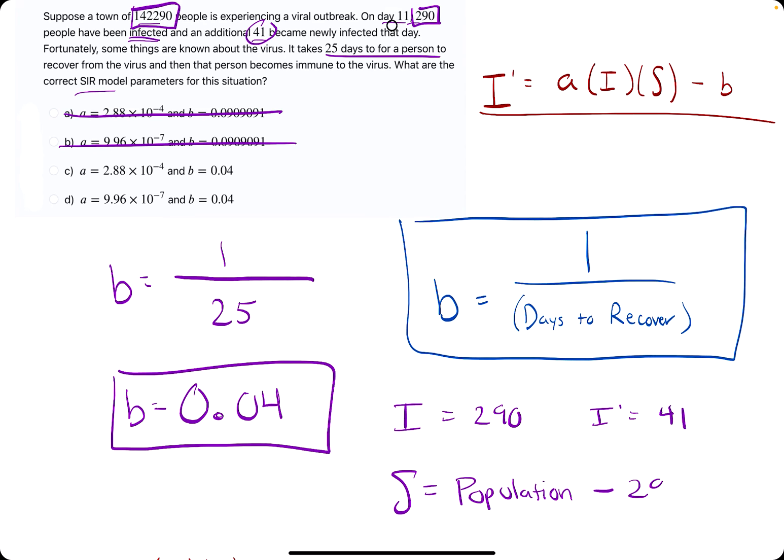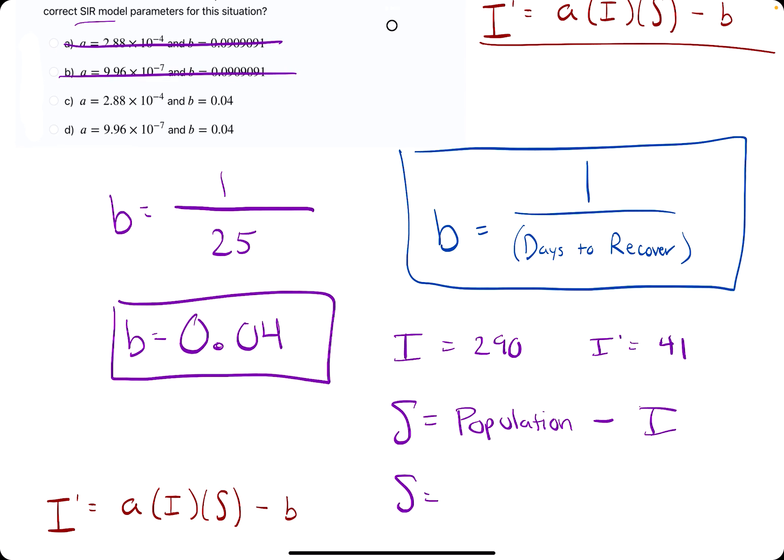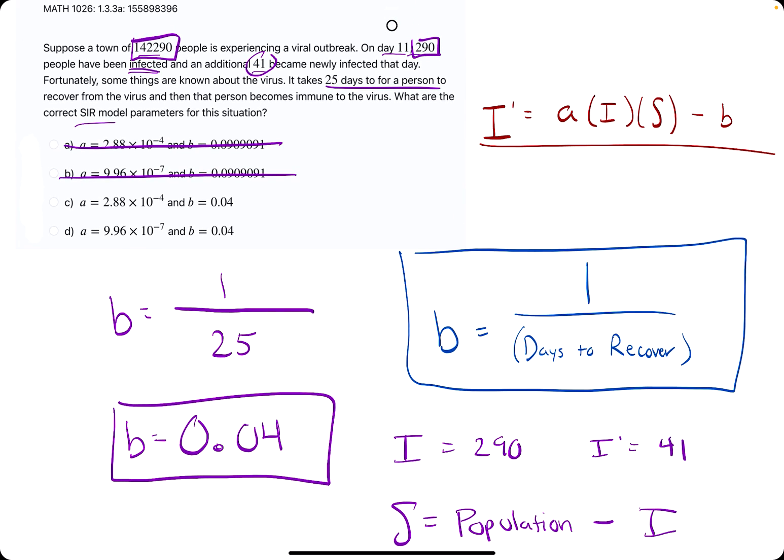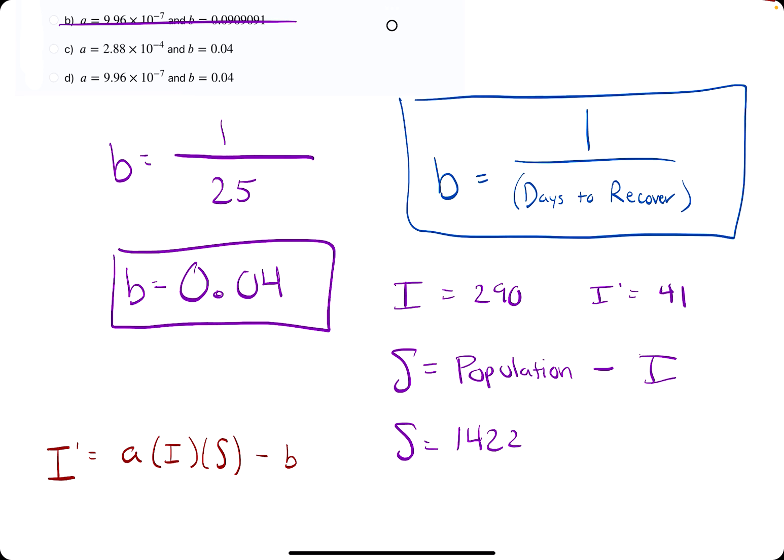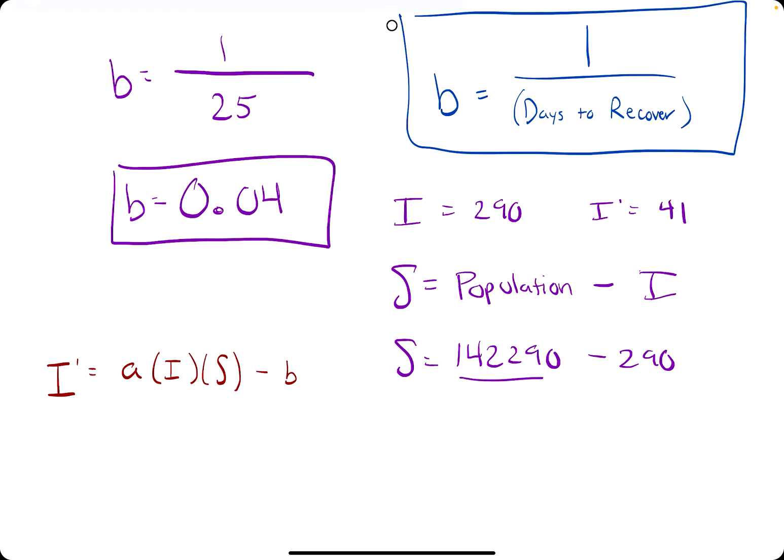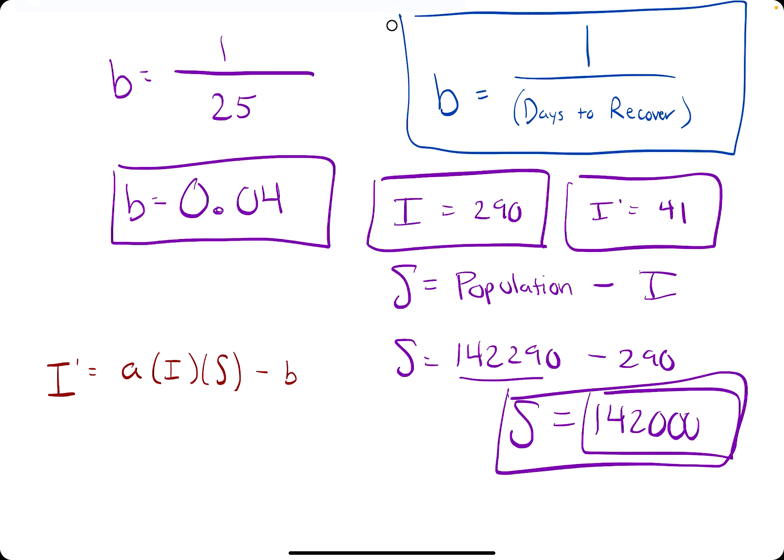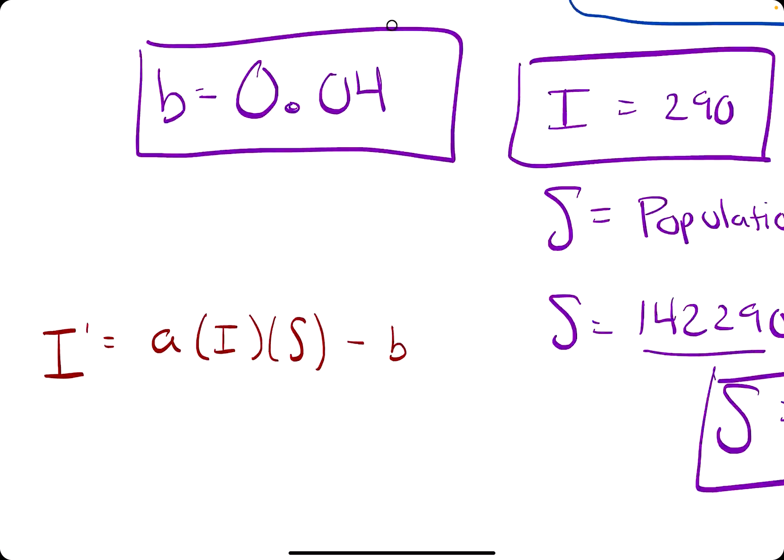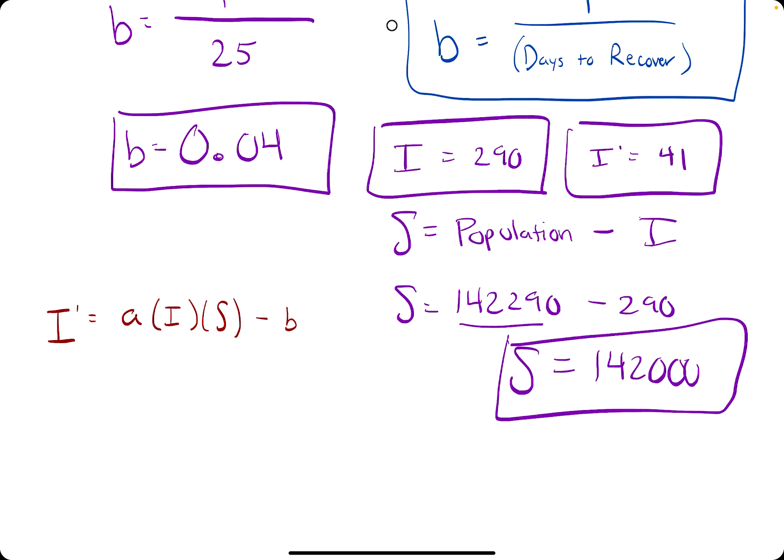So I guess we'll just say the population minus the number of people who have been infected. So that is 290, or I'll just say infected for now, and then we'll go ahead and calculate it here. We'll have 142,290 minus 290. There's a reason they have 142,290 minus 290, and that's because we can get a nice clean number for our S value. So we have B, we have I, we have I prime, we have S, and we have everything we need to plug into this equation to solve for A.